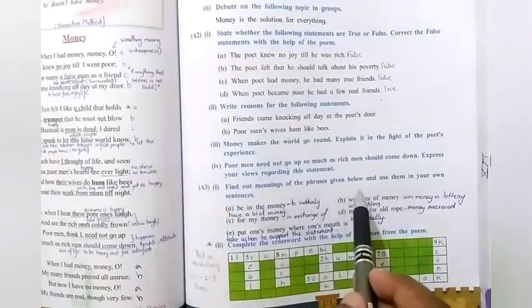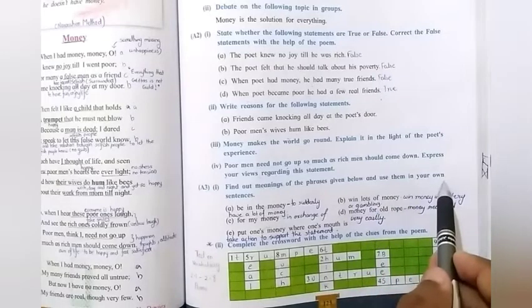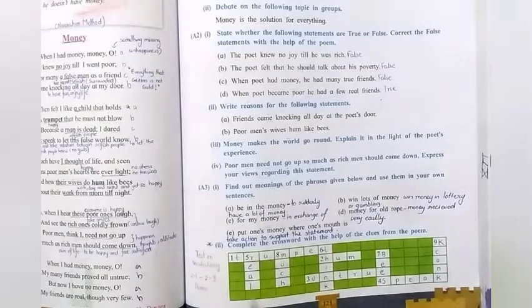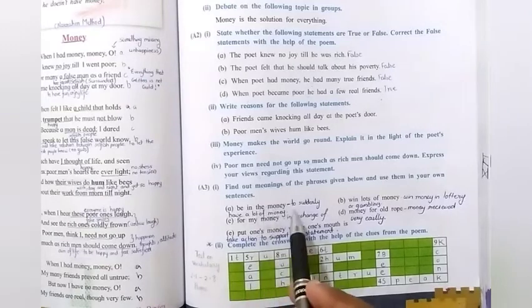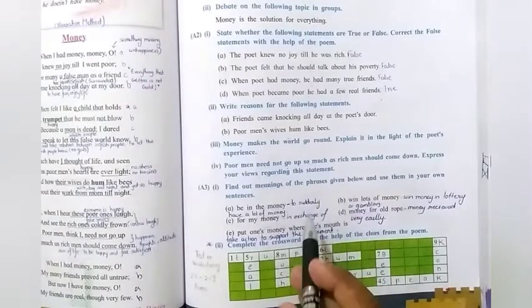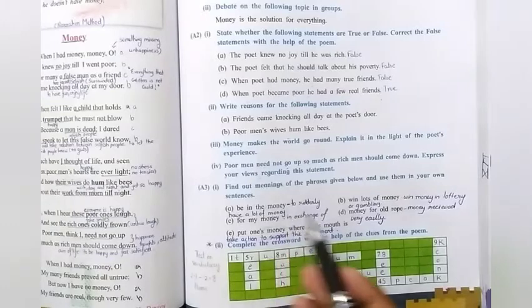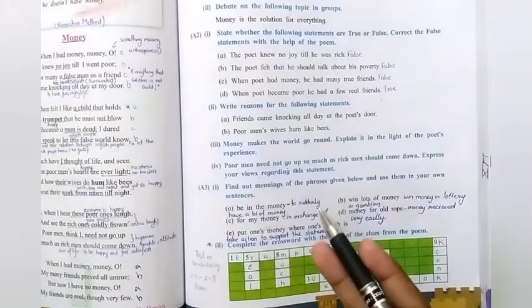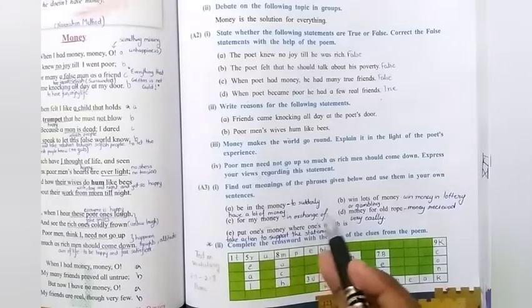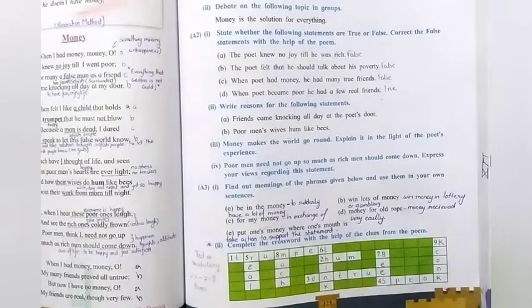Okay. Now, the next one is A3. First one. Find out meanings of the phrases given below. And use them in your own sentences. So, phrases are given to you. I will tell you the meanings to this. And then, we will see the sentences. First A. Be in the money. To suddenly have a lot of money. So, this is the meaning of this particular phrase. So, the sentence to this is that. It looks like he is in the money. The way every week he uses new electronical items. So, the meaning of this is that. He has a lot of money. Suddenly, he had a lot of money.